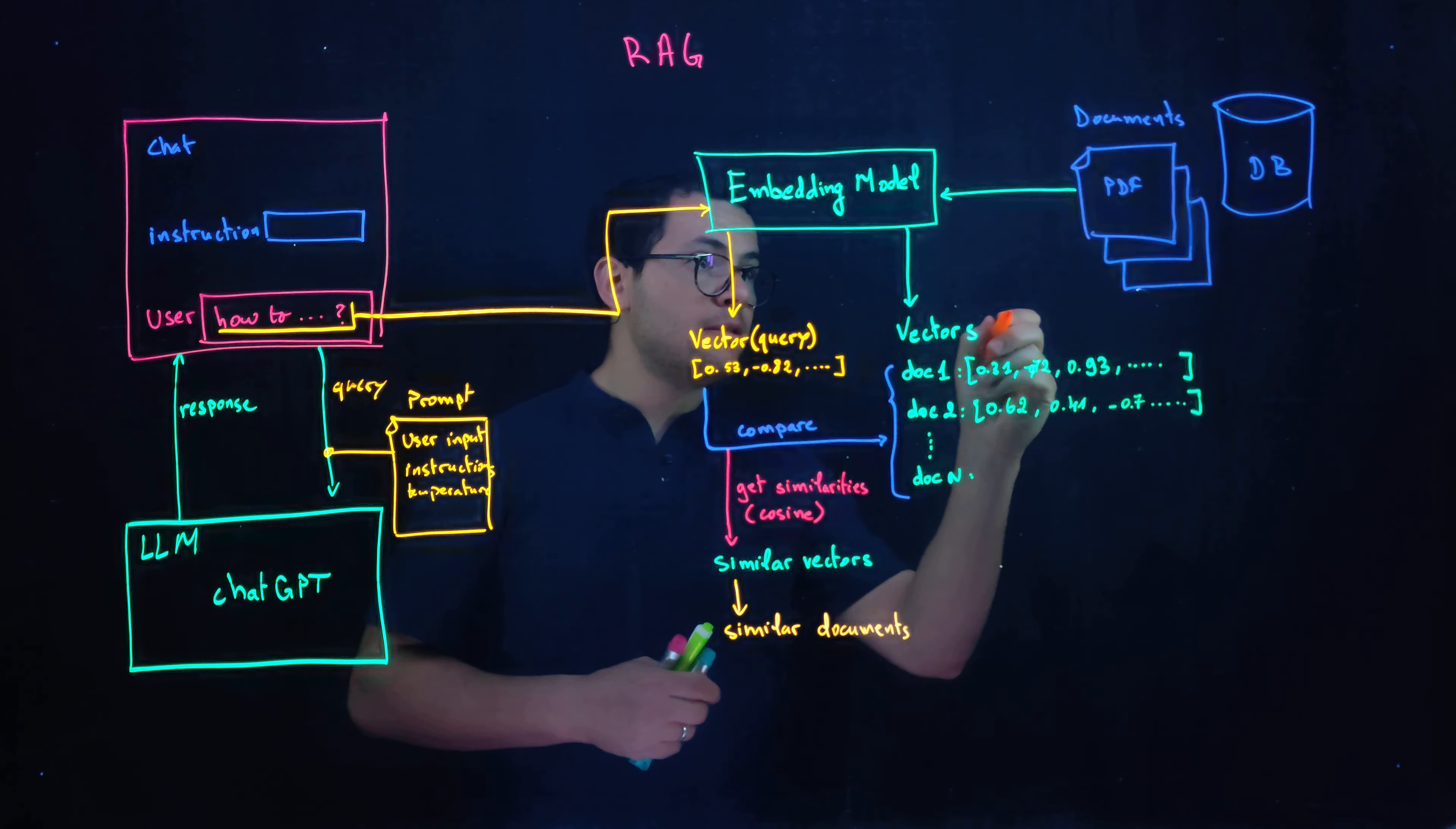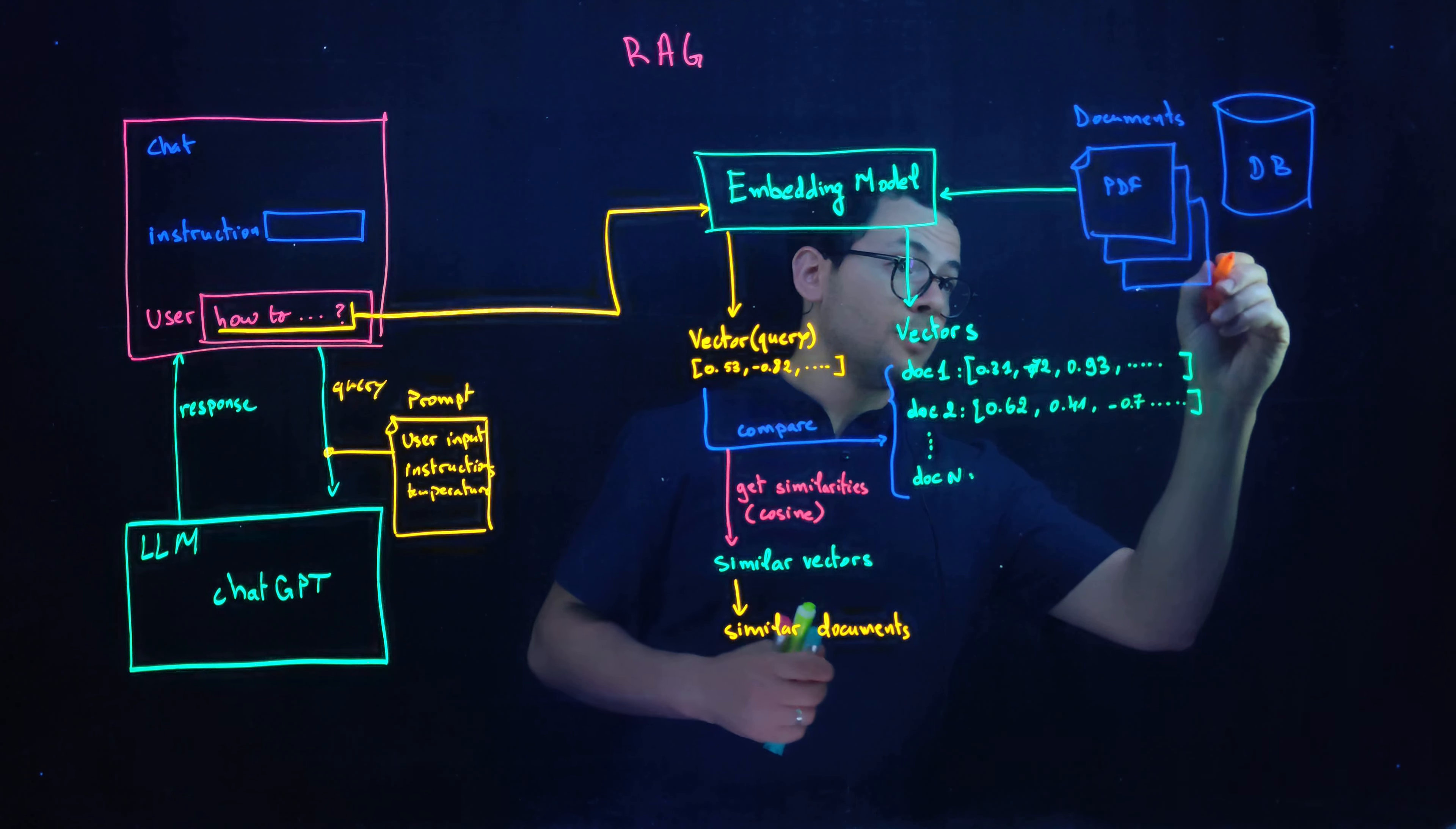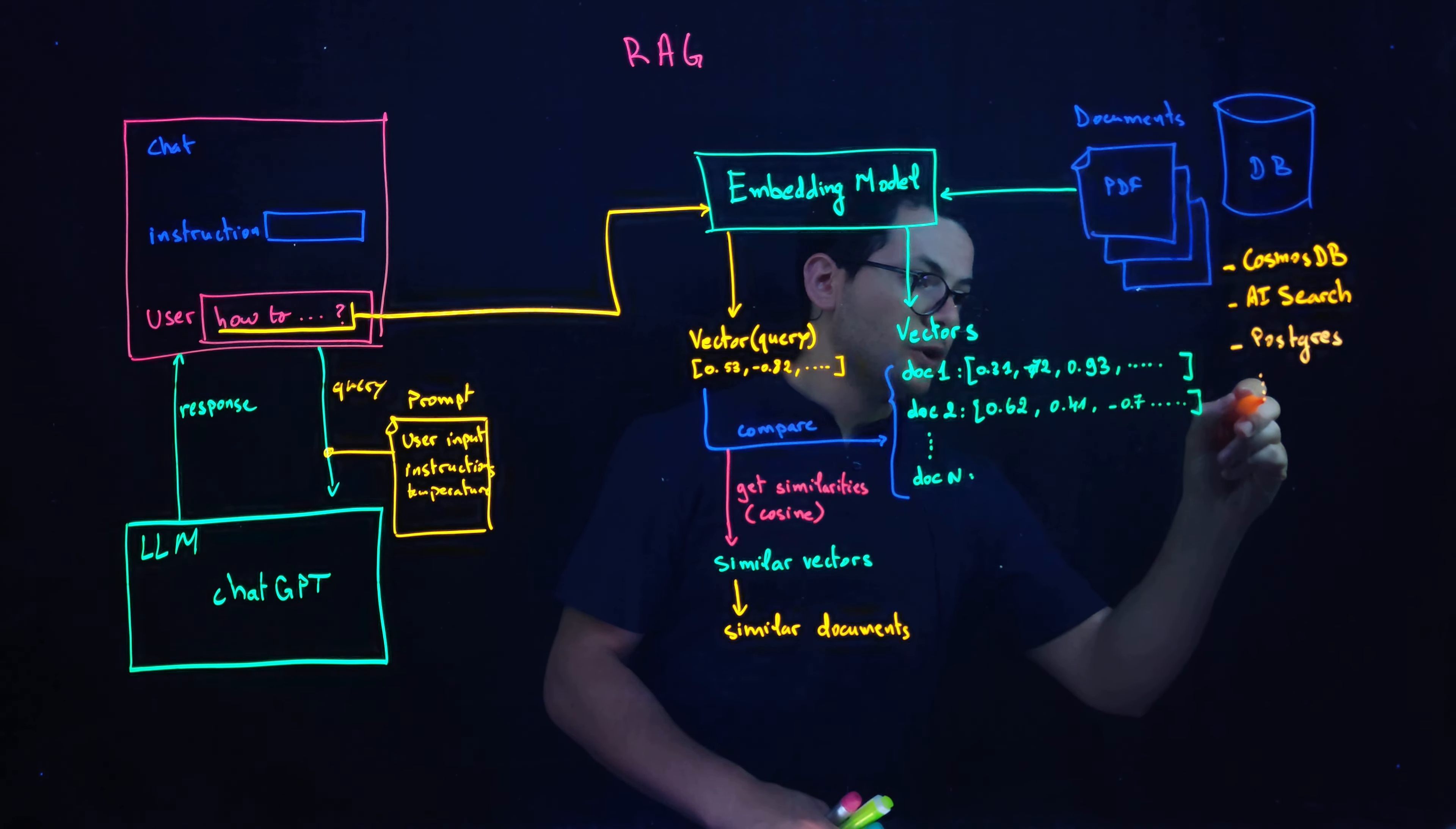Of course here we should save in a database the document and also the vector that is related to that document. That could be achieved using documents or databases like Cosmos DB or Azure AI Search, PostgreSQL and many more.